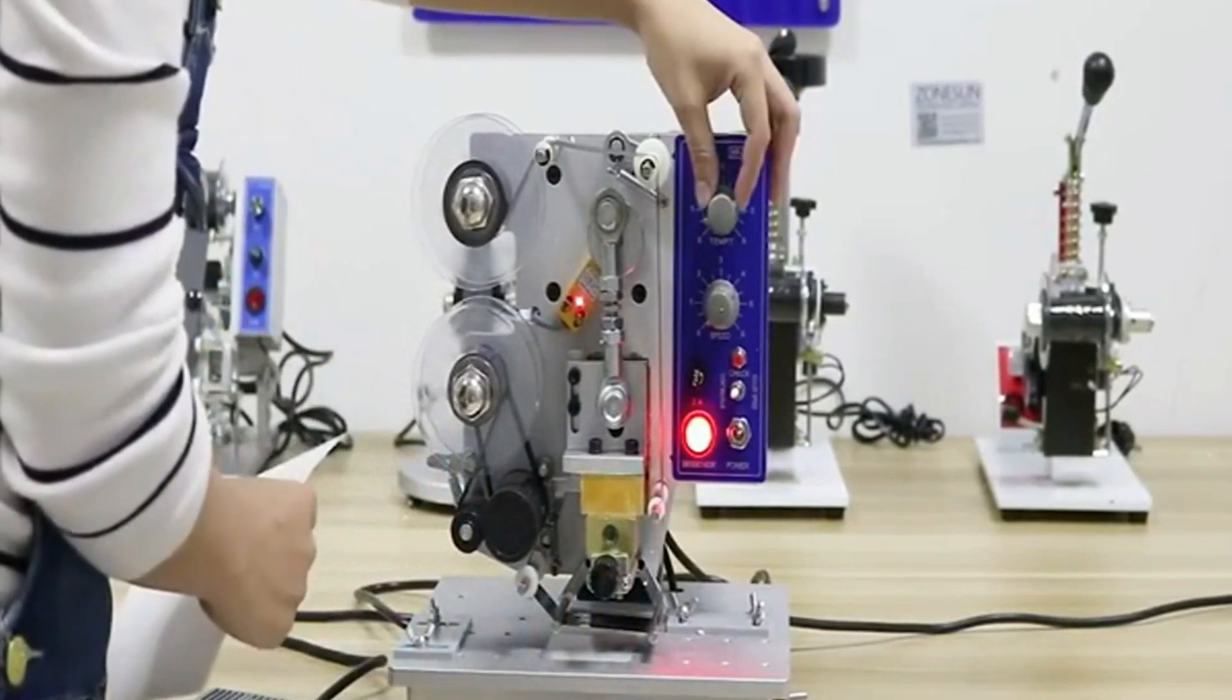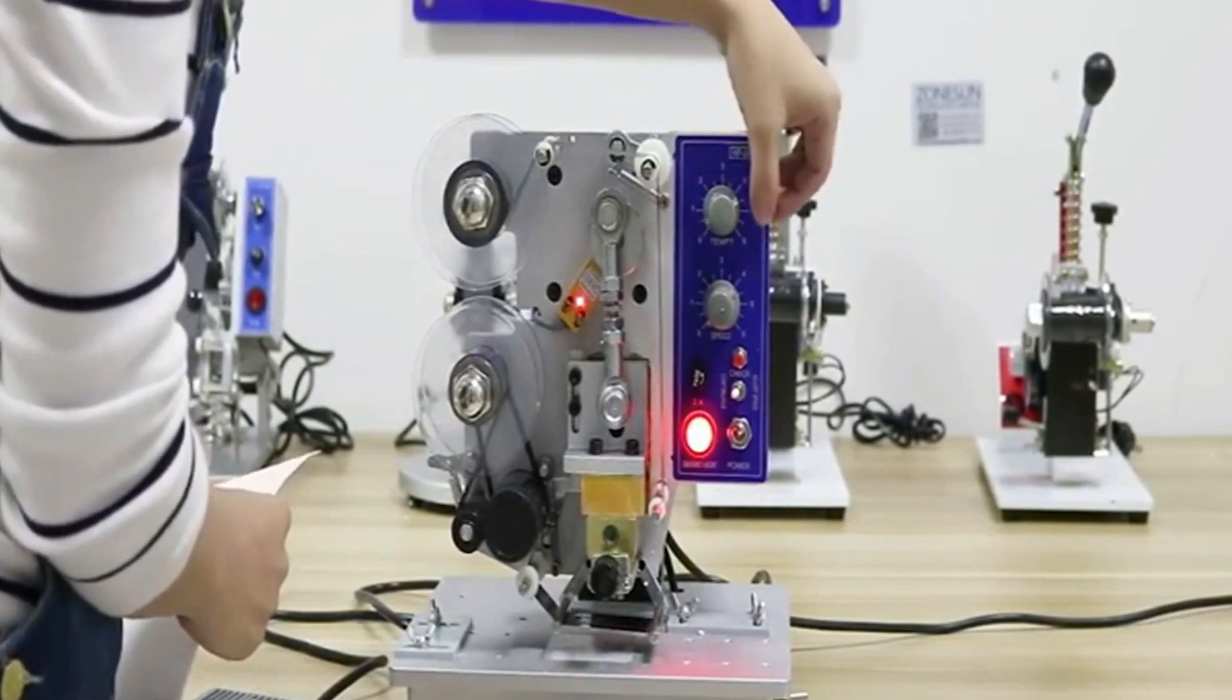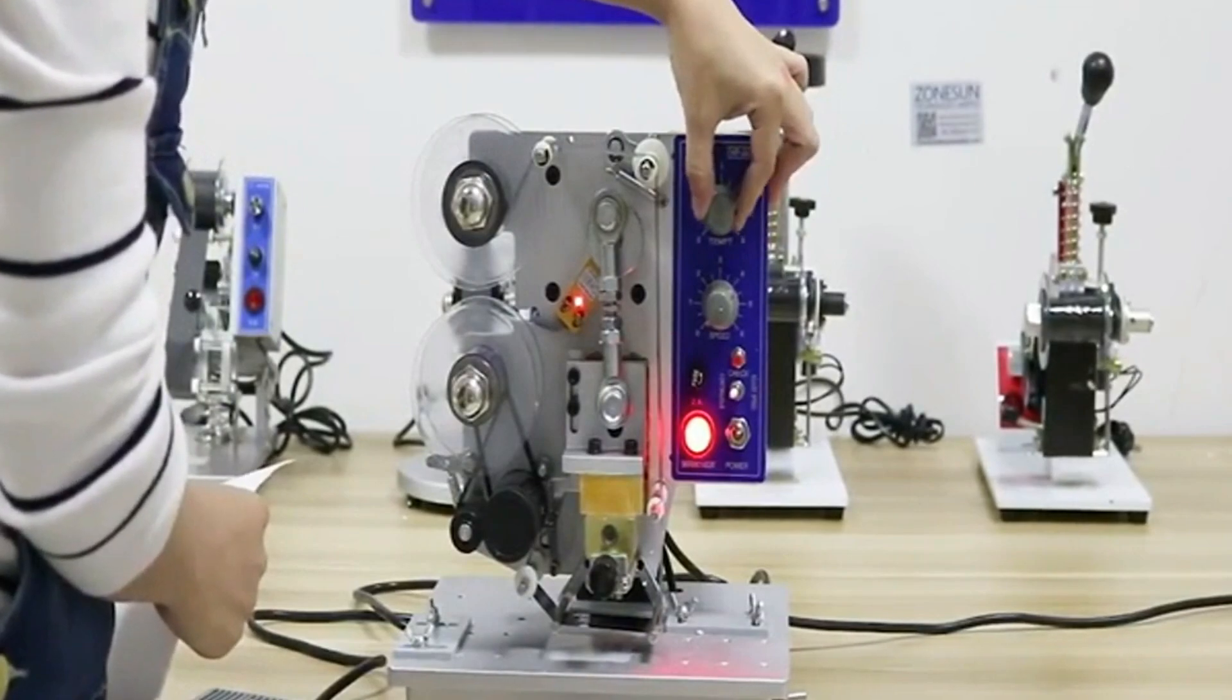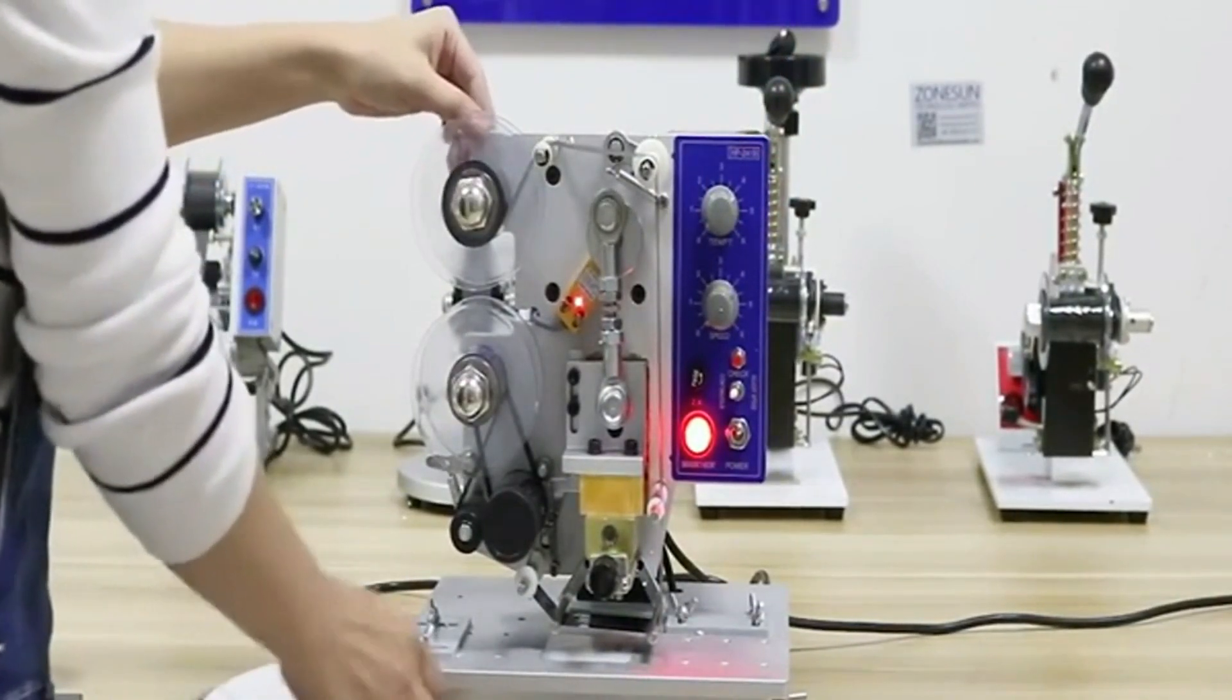This button is to adjust the temperatures from 0 to 6. When you turn the machine on, just preheat it for 2 minutes.